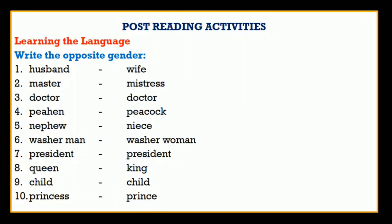Let's match your answers. The opposite gender of husband is wife. Master — mistress. Doctor — doctor. Peahen — peacock. Nephew — niece. Washerman — washerwoman. President — president. Queen — king. Child — child. Princess — prince. This activity is related to learning the language.